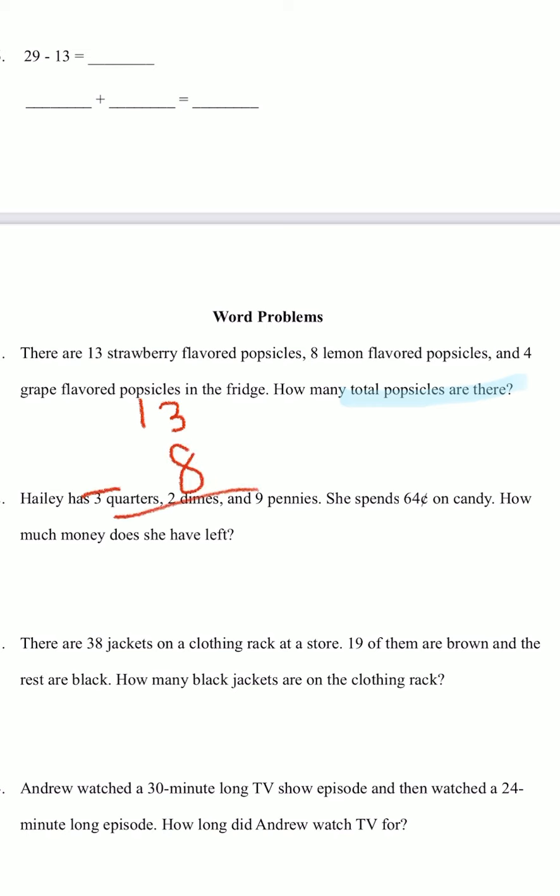Let's try 13 plus 8 first. So 13. 3 plus 8, that's going to be 1. And then the 1 goes up. And we have 2, right? And then 2 plus 4, that's 5. And the 2 drops. So in total, we have 25 popsicles.